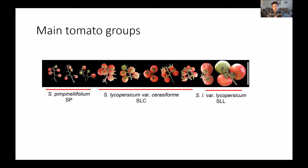Here are the main tomato groups. We have the wild tomatoes, which we call Solanum pimpinilifolium, or SP. We have the intermediate group, which we call Solanum lycopersicum variety Cerasiforme, and we have the cultivated tomatoes, which are Solanum lycopersicum variety lycopersicum.